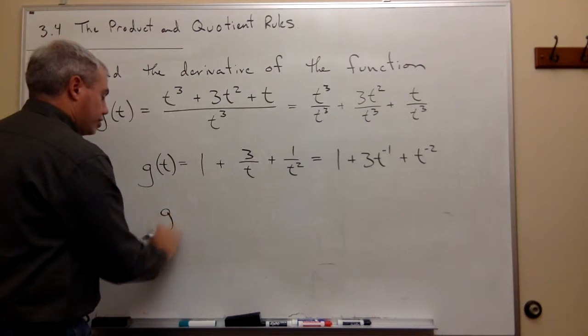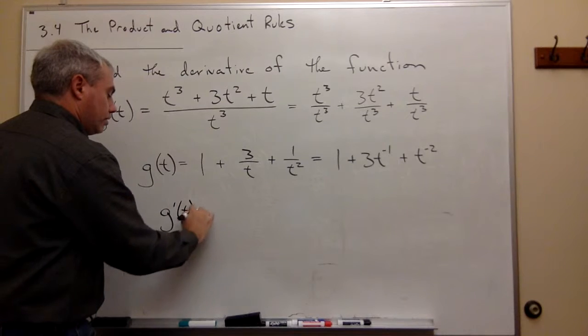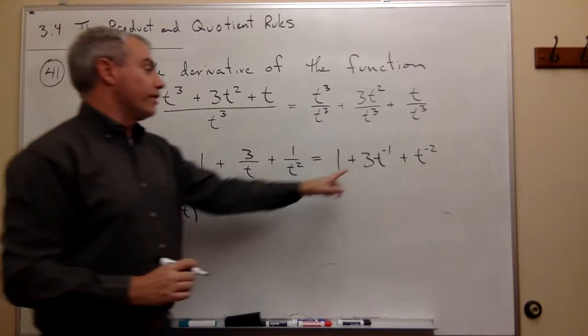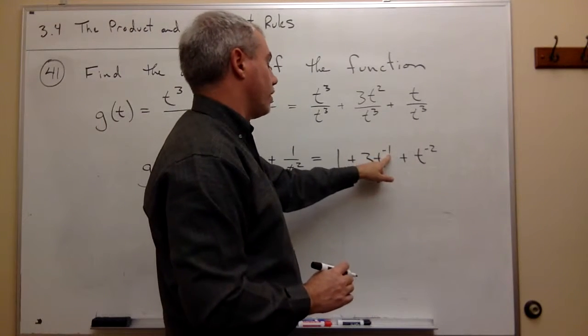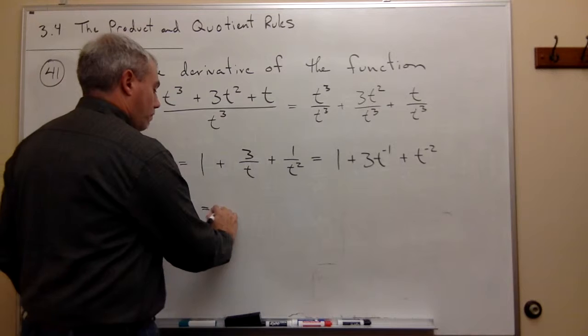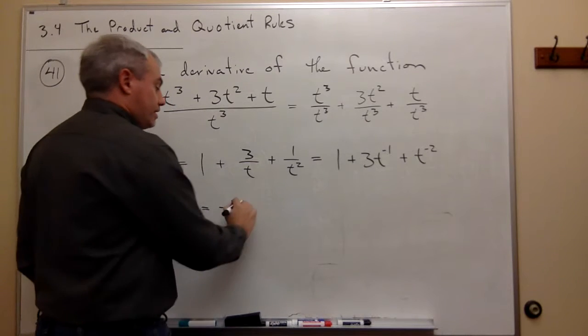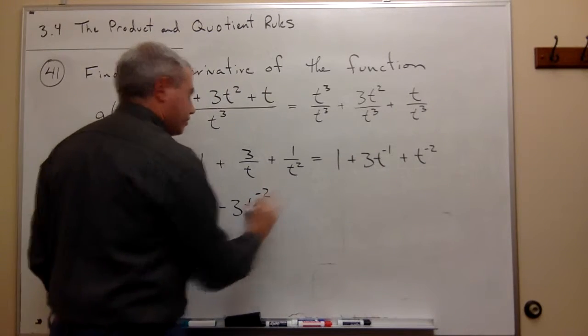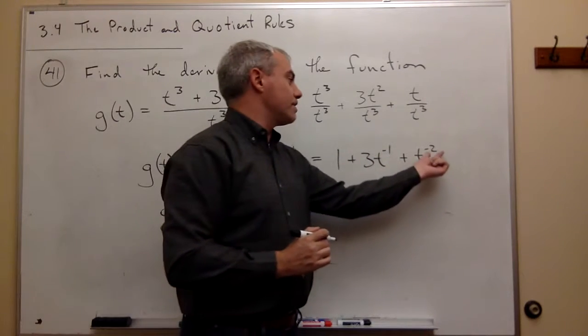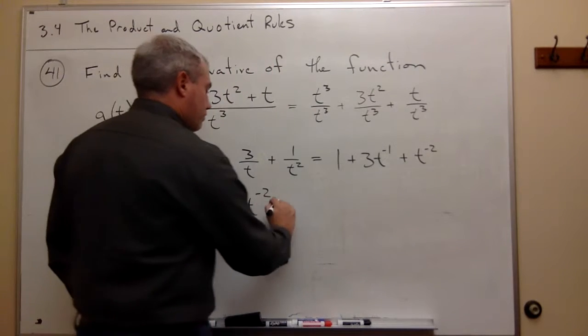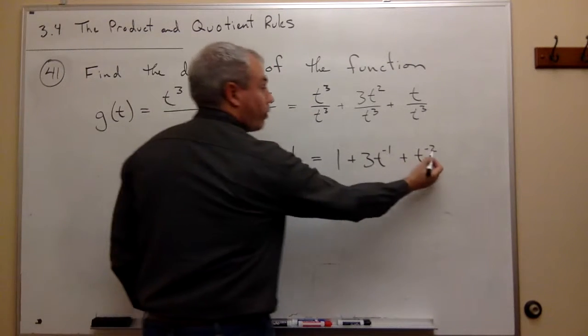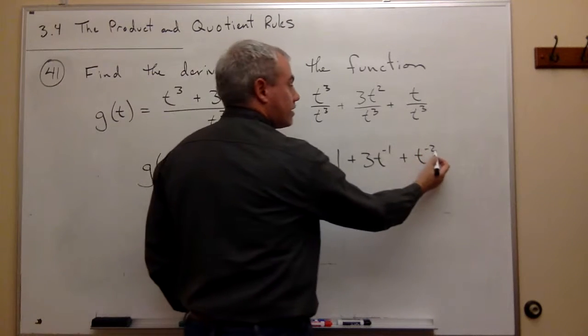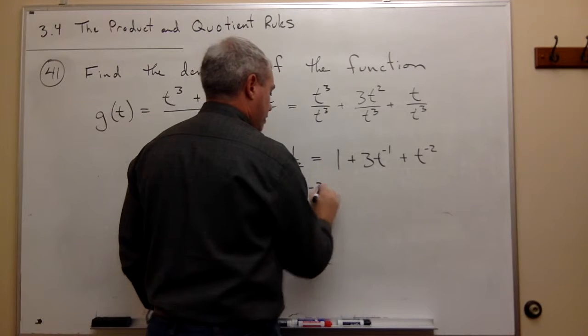So let's do it. So g prime of t is equal to, the derivative of 1 is 0, the derivative of 3t to the minus 1, well, I bring the minus 1 down, and I get minus 3 times t to the minus 1 minus 1, so minus 2. And then the derivative of t to the minus 2 is minus 2t, so I brought down the minus 2, minus 2t to the minus 2 minus 1, or minus 3.